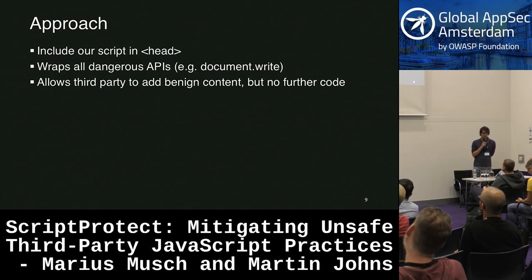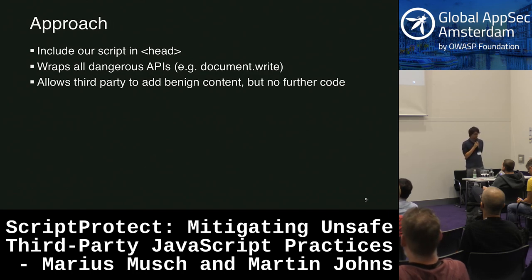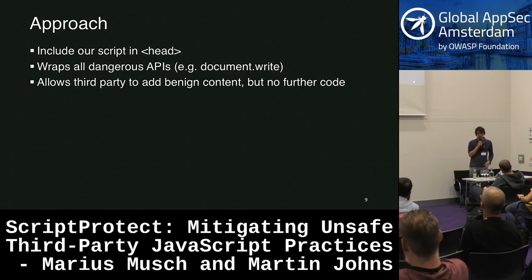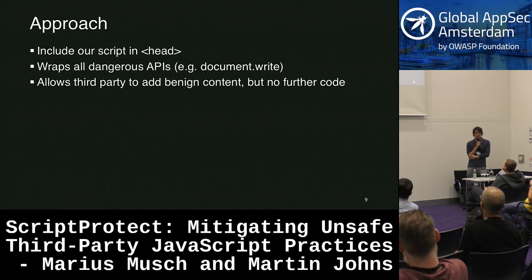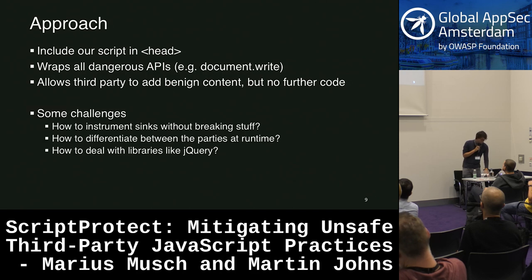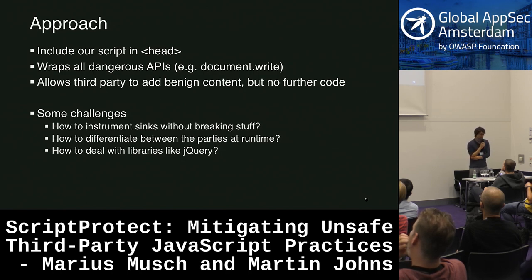How does it work? You add a special script at the very top of your document. This will be loaded first, so we can set up the stage so that all further script additions will first be audited by our protection mechanism, which decides if that's an allowable case or not. It wraps all the dangerous APIs — things like document.write, innerHTML, and lots of other stuff — and it allows benign content that isn't actively executable, like a link or an image.